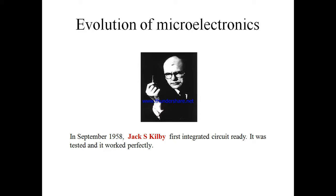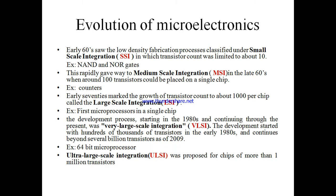Medium Scale Integration emerged in the late 1960s, followed by Large Scale Integration and VLSI in the 1970s and 1980s, with tens of thousands — then millions, and now billions — of transistors on a single chip. The first integrated circuits contained only a few transistors, 1 to 10, called Small Scale Integration (SSI). Examples of SSI include logic gates and early linear ICs.